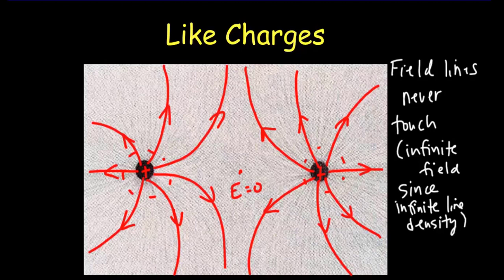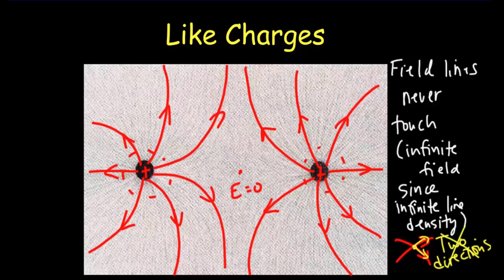If field lines never touch, they can never cross either. It wouldn't make sense if the field lines crossed, because if they crossed you'd be saying you don't know what direction the electric field is in — it would look like two lines meeting at a point. If two lines cross, what direction would you say the field is? Is it along one field line or the other? We can't have two directions to the electric field at once — that's not possible.